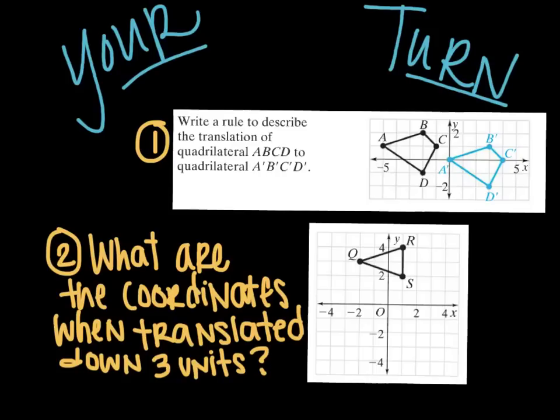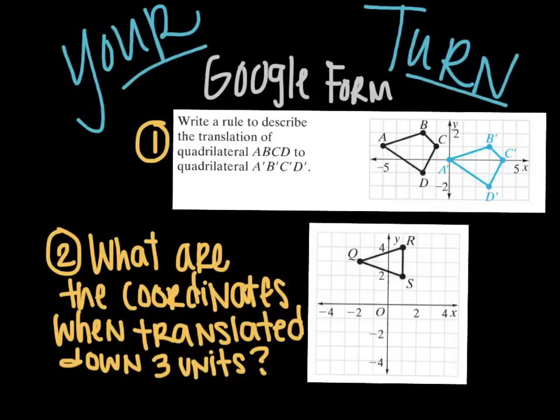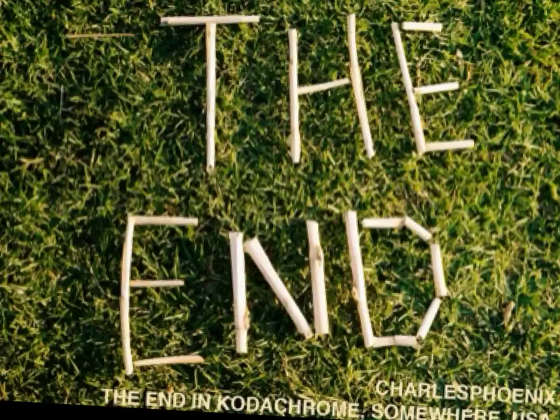Alright, your turn. First question. Write a rule to describe what happened in this picture. Make sure you start at the original shape. And then go to the image, not the other way. Because that's a mistake that can be made. And then the second one, what are the coordinates of this shape when it is translated down three units? You will need to do a Google form. So don't forget to fill that out when you are done. So that I know where you're at when we're talking about this. This is the end of your video. Thank you for watching. Have a great day.